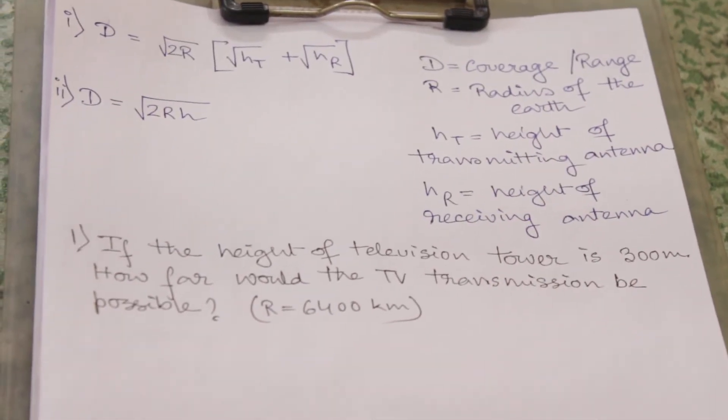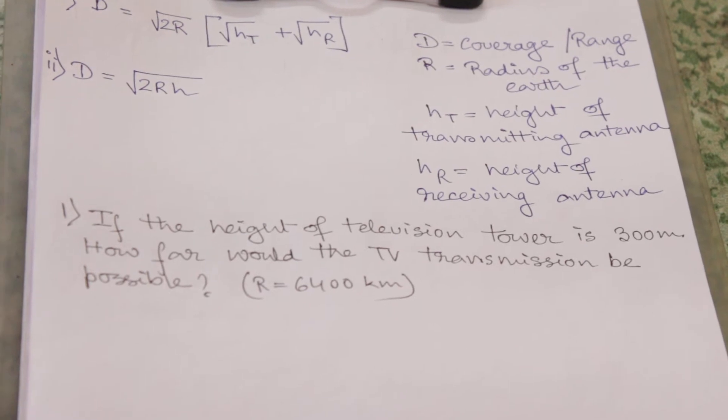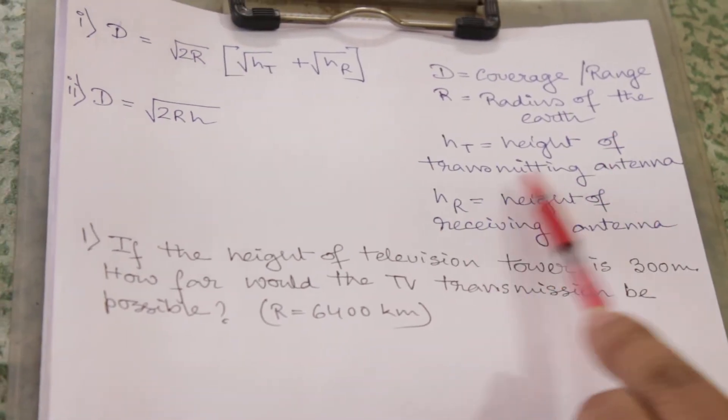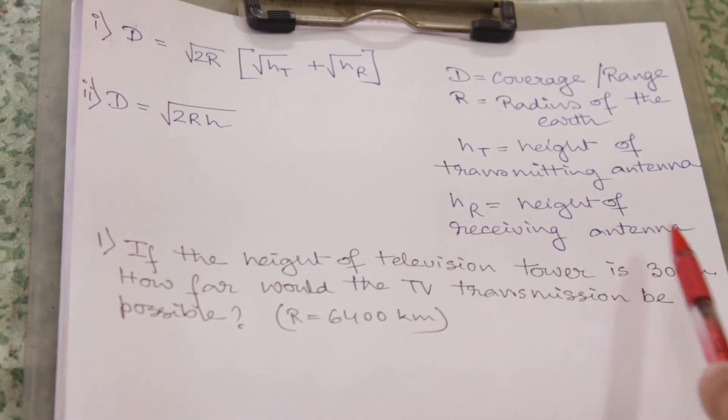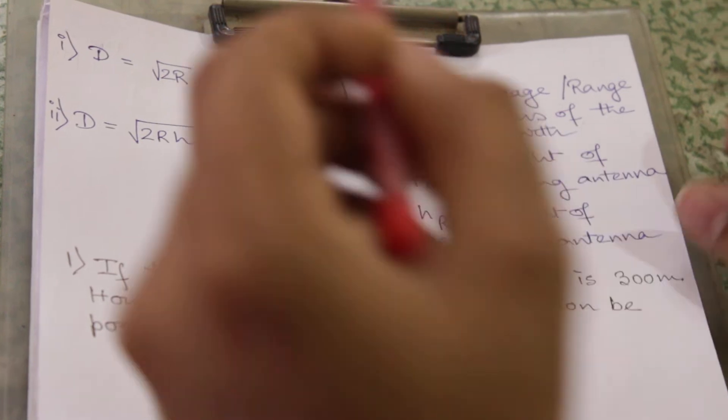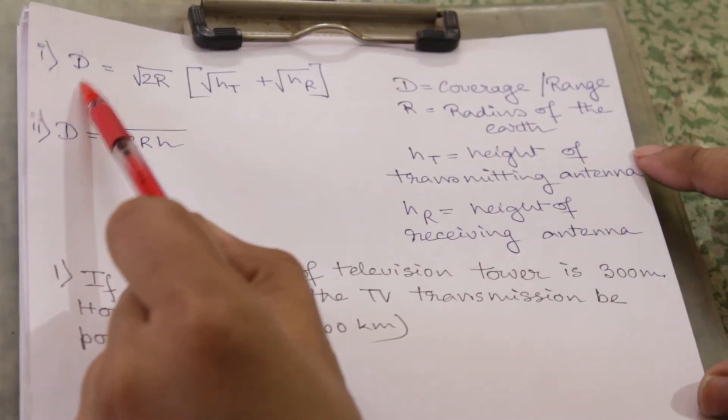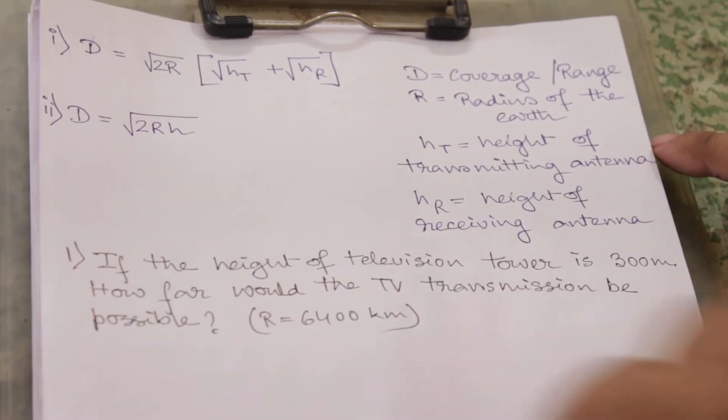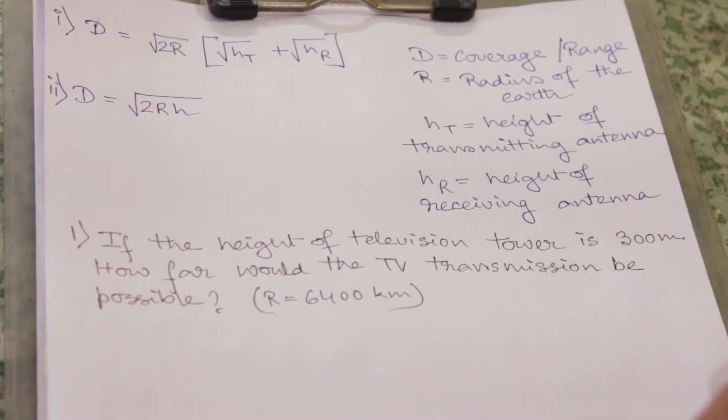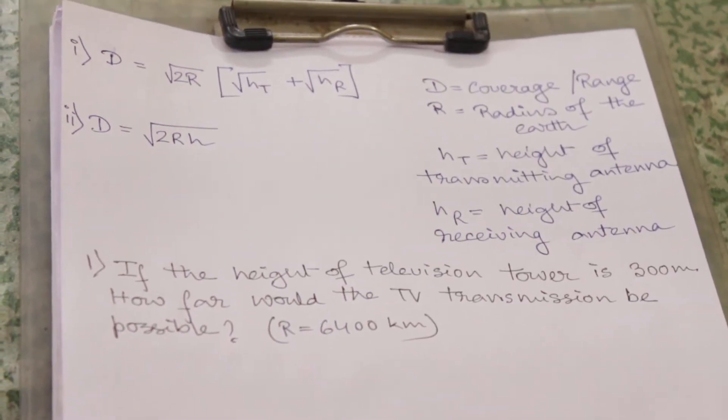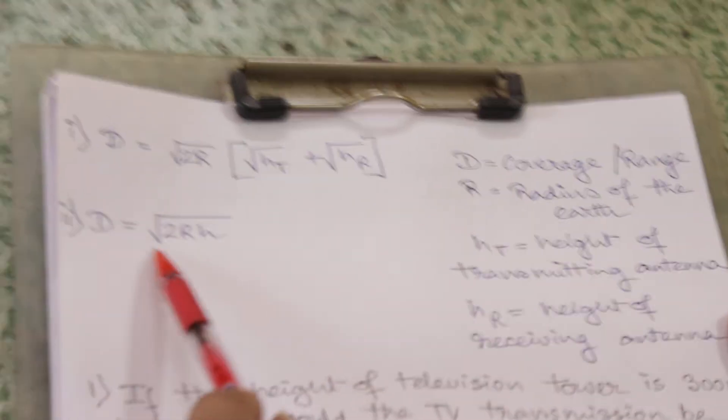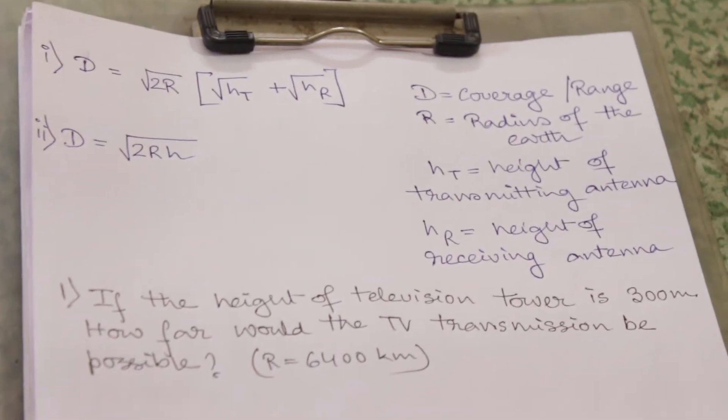R is the radius of the earth, ht is the height of transmitting antenna, and hr is the height of receiving antenna. If both of them are given, then the range will be capital D equal to root 2R times root over ht plus hr. In many cases we will find only one height is given. In that case, the formula will become capital D equal to root over 2Rh, where h is the height of the antenna.